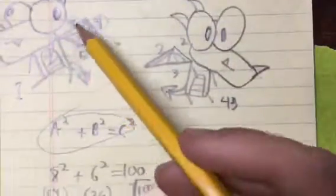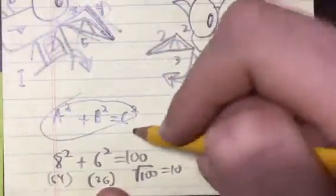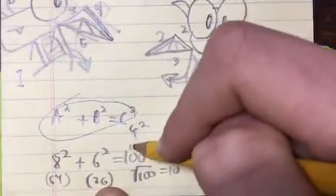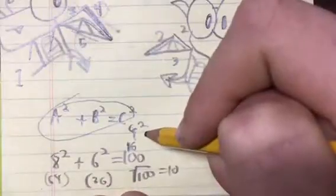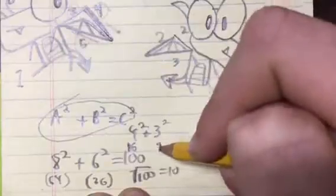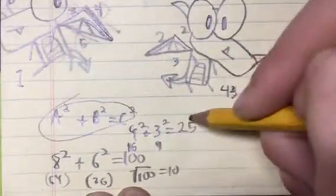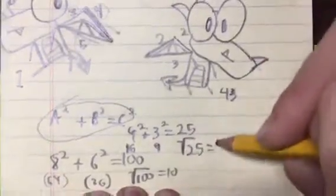The same goes for this. 4 squared is 16, plus 3 squared is 9, equals 25. If you find the square root of 25, it equals 5.